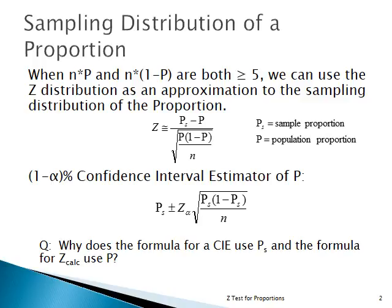P-sub-s is what we use to denote the sample proportion. Capital P is the population proportion. Depending on the book you're using, some people use the Greek letter pi as the population proportion parameter. But we're going to consistently use capital P.